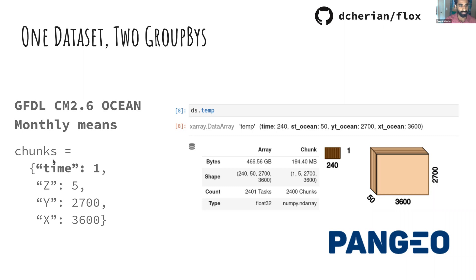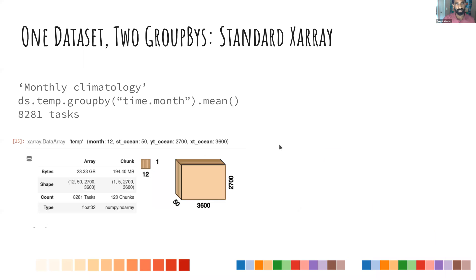This dataset is monthly means, so each time step is a monthly mean — a January mean, then a February mean — and it's chunked so there's one month per time chunk. The chunks are big in space and small in time. I'll show two group-by operations. The first is the monthly climatology: you do this in xarray and the output removes the time dimension and adds a month dimension — only 8,000 tasks, pretty nice.